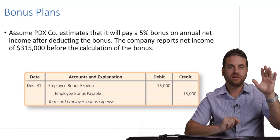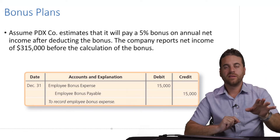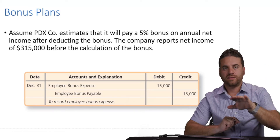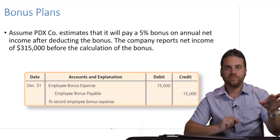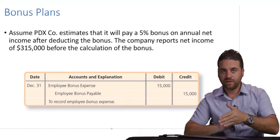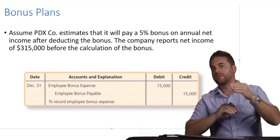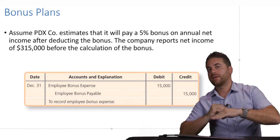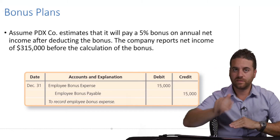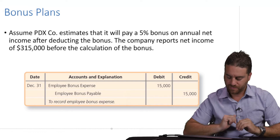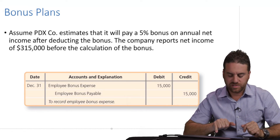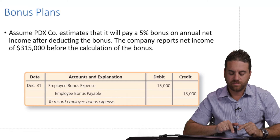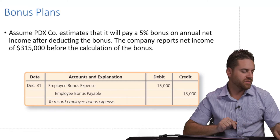So it's not, for example, $50,000 multiplied by 5% and then subtract the 5% out of the $50,000 to calculate your net income. No. It's 5% of the net income that was calculated after you already subtracted the bonus. The company reports net income of $315,000 before the calculation of the bonus.